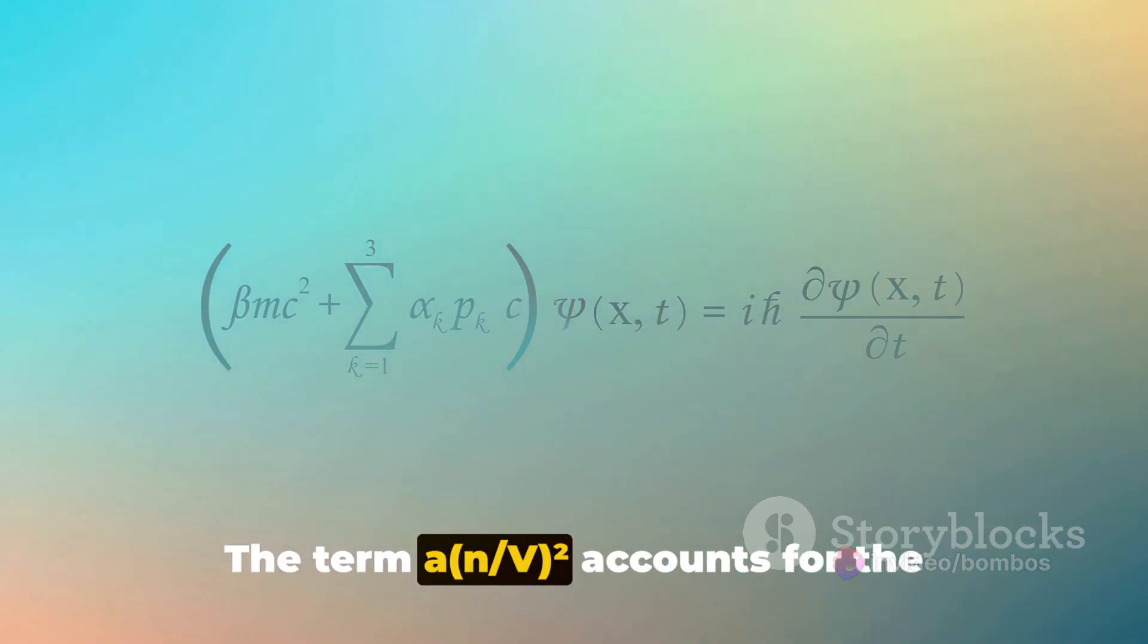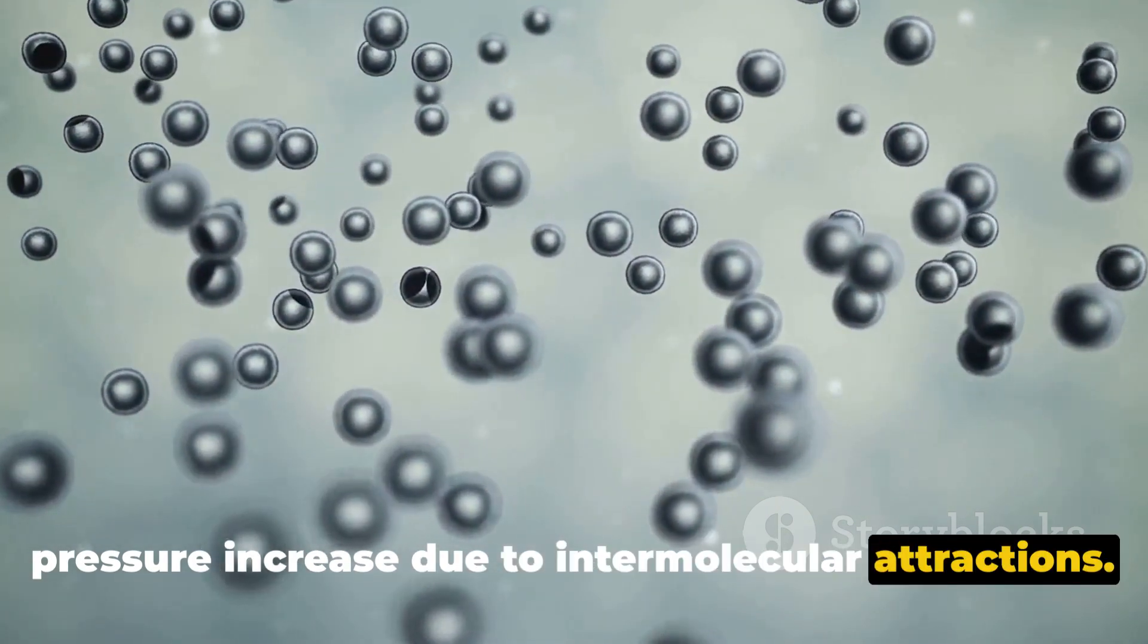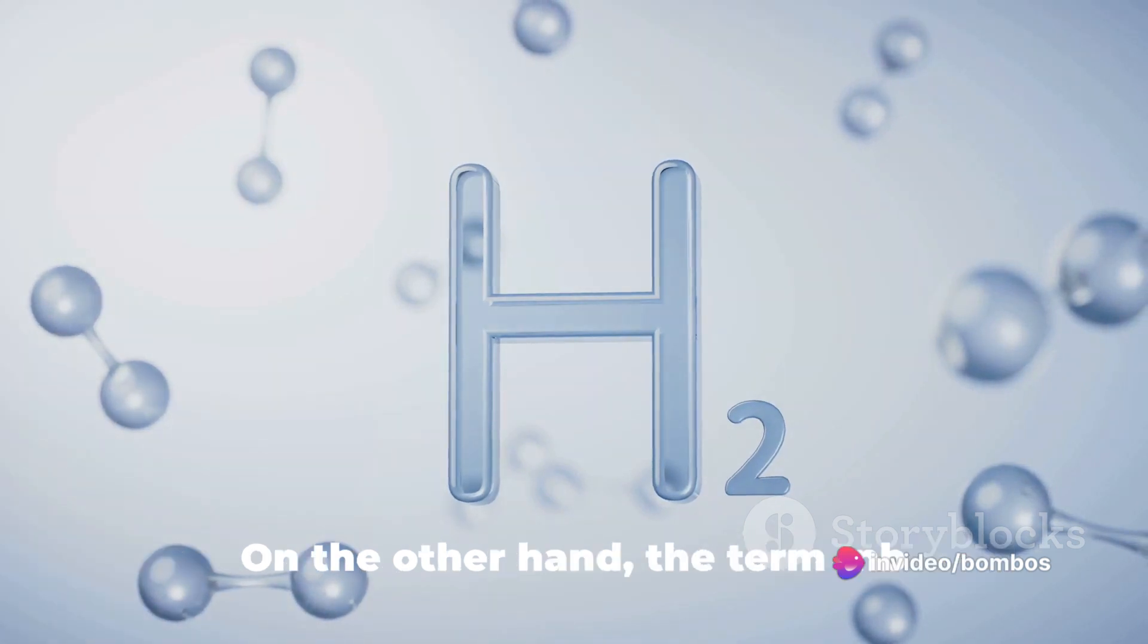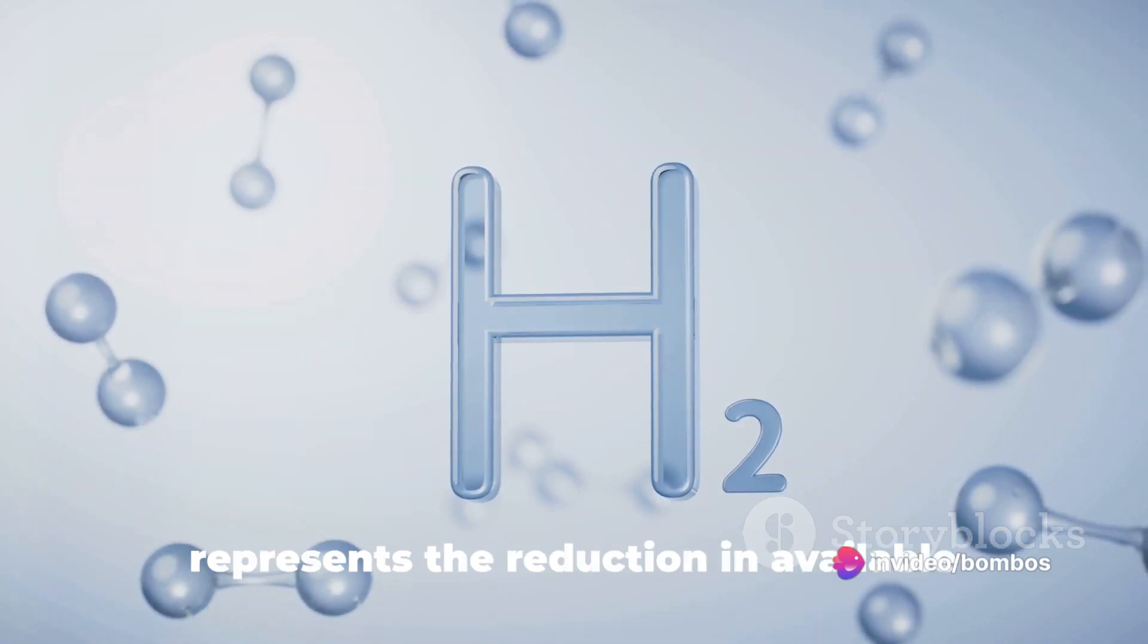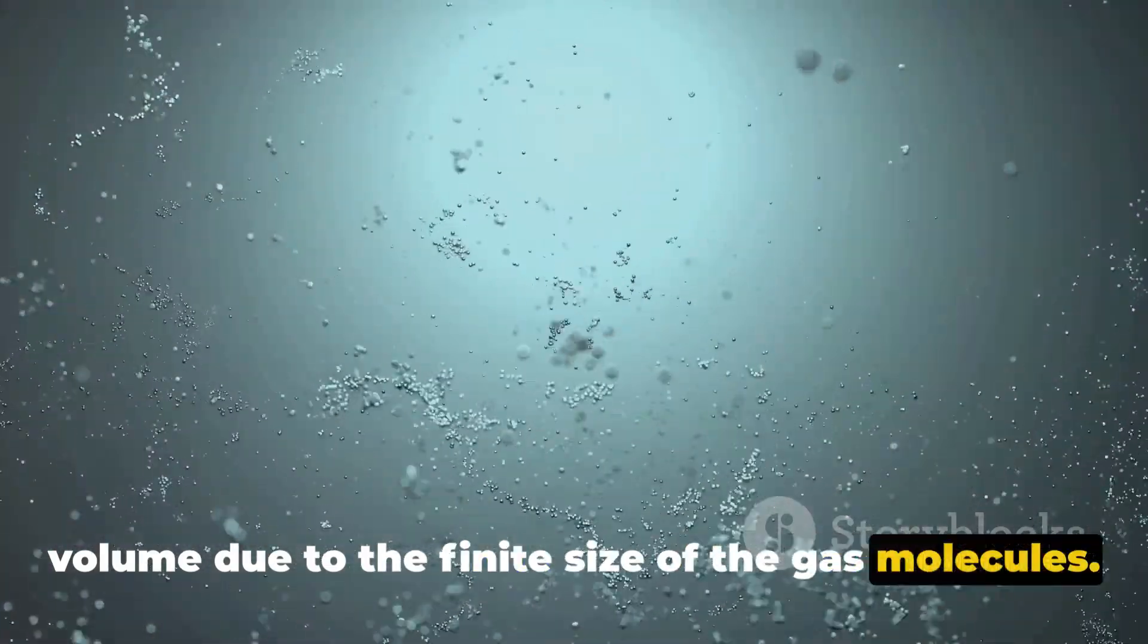The term An²/V² accounts for the pressure increase due to intermolecular attractions. These attractions become more significant as molecules get closer at high pressures. On the other hand, the term nb represents the reduction in available volume due to the finite size of the gas molecules.